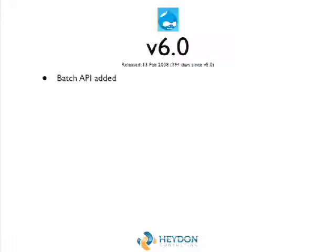Drupal 6 was actually a fairly significant release — it actually took over a year to develop, which was probably the beginning of our longer development cycles. We got the batch API, really good for long-running processes like VBO. It was taken out of update.php and split into its own area — batching off forms was just so easy. The Form API had also been rewritten a little bit.